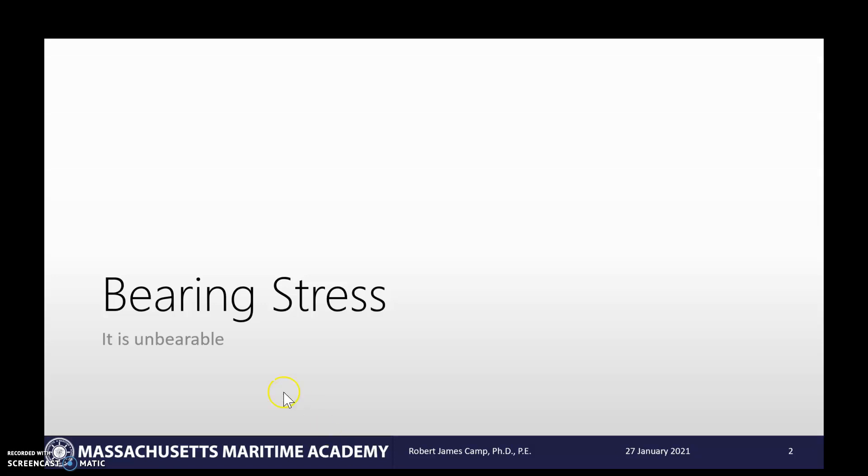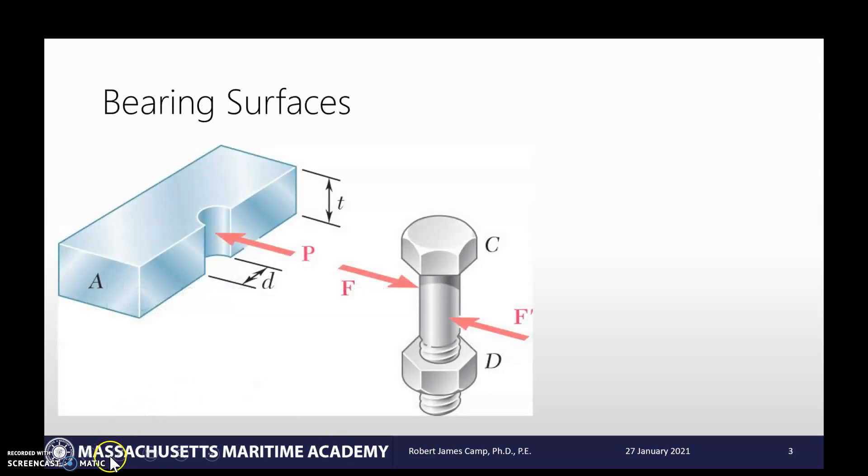If we take a look at this slide here, what we have is a bolt. My bolt is going to be holding two pieces of material together, whether it's metal or plastic or whatnot. Where bearing stress becomes really important is when you have a metal screw or a metal bolt holding together a plastic part. You're not so much worried about that metal connector failing as you're worrying about the material itself being ripped apart.